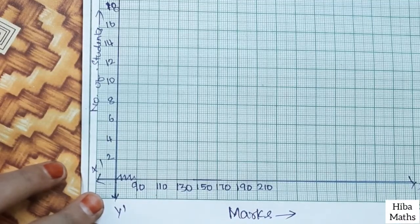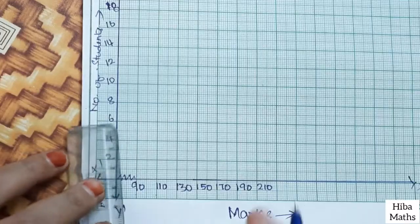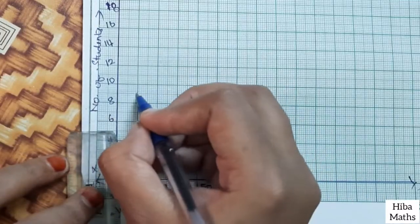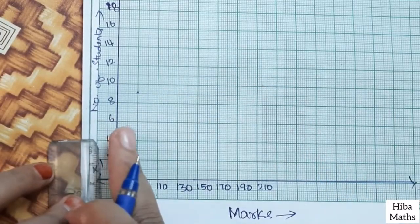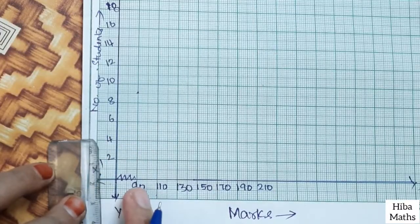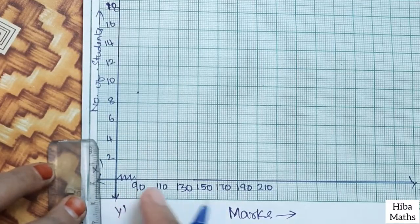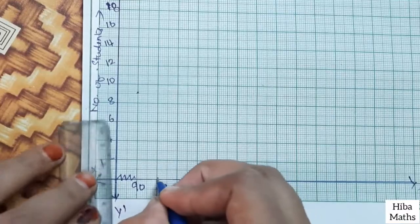The first data is 90 to 110 is 9. So 9 is equal to 8 and 10. Now we plot the line at 90 and 110.